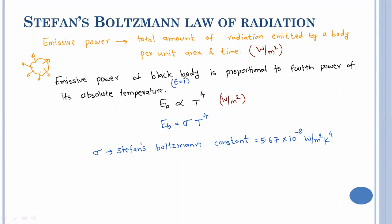So the emissive power of a black body is proportional to the fourth power of its absolute temperature, and introducing the Stefan-Boltzmann constant sigma, we get Eb = σT⁴. The value of the Stefan-Boltzmann constant is 5.67 × 10⁻⁸ W/m²K⁴. If you want the total amount of radiation in watts, it will be σAT⁴. This is the Stefan-Boltzmann law of radiation — remember the value and units of the constant, the definition of emissive power, and what a black body is.